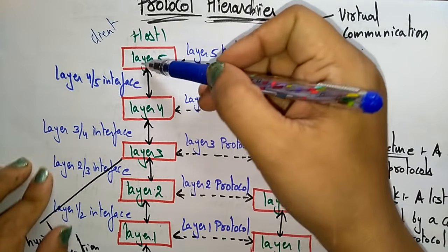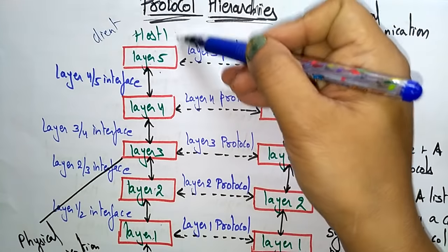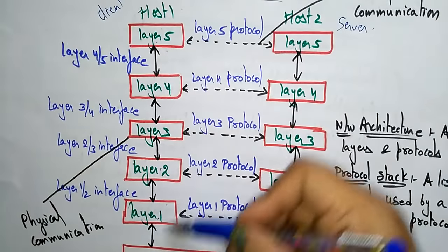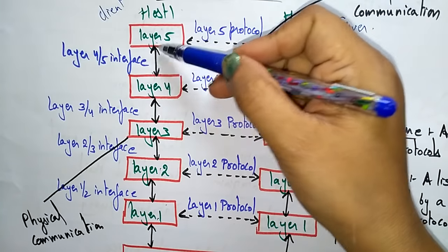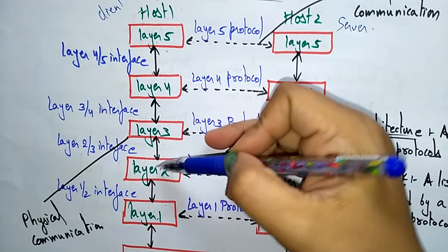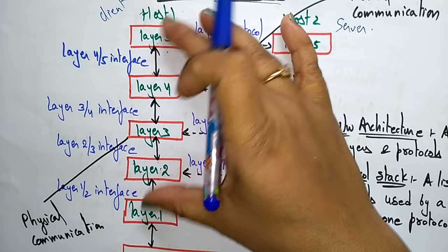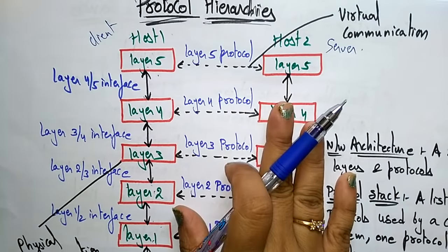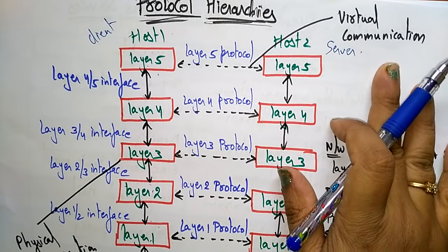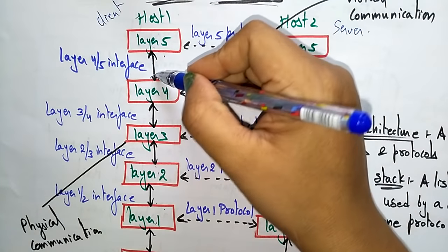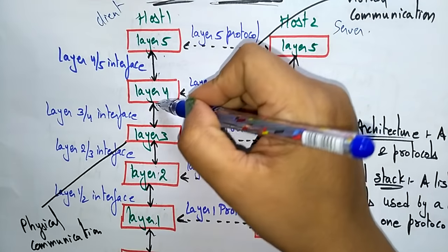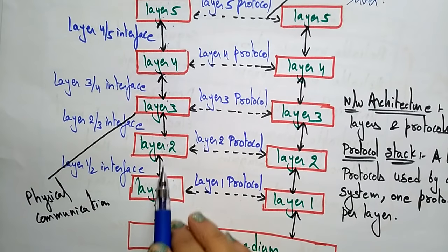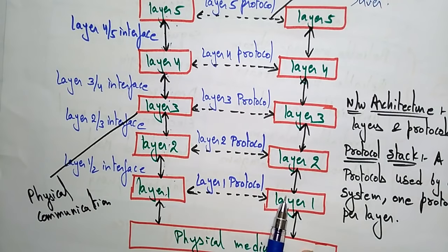Within a single computer — host one or host two — within the layers you have physical communication. Outside the layers, between the two computers, they have virtual communication. Layer five is an interface between layers four and five, and each layer acts as an interface between the adjacent layers.